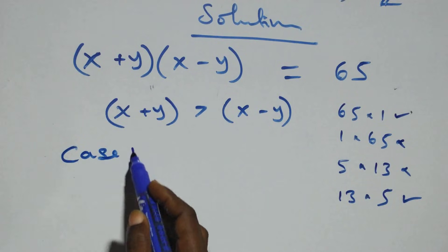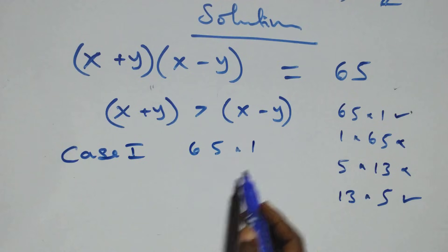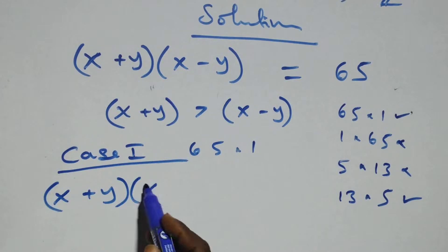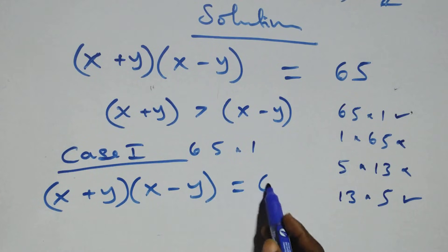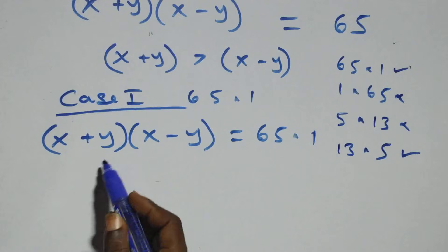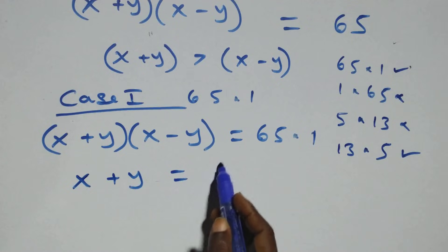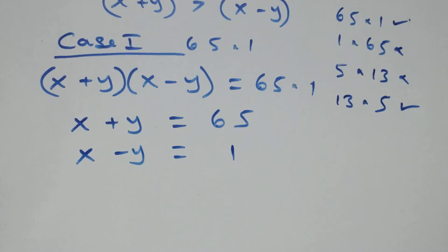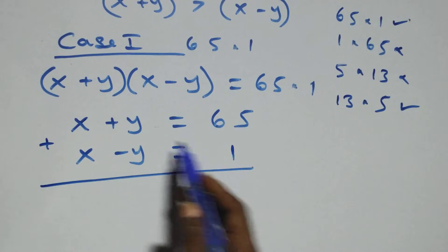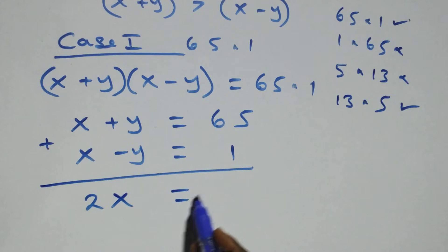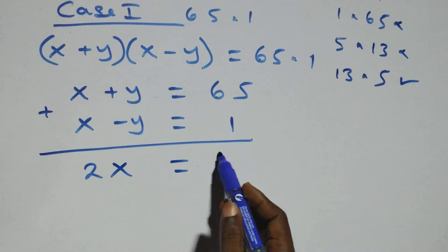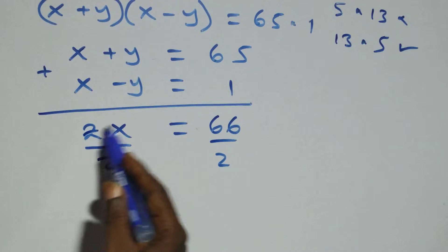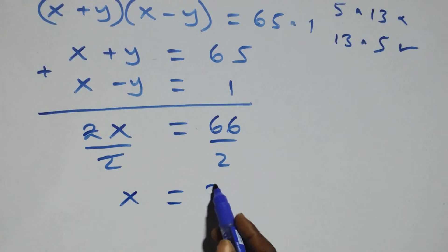Case 1 is 65 times 1. This implies the equation becomes: x plus y, open bracket, x minus y, equals to 65 times 1. This implies x plus y equals to 65 and x minus y equals to 1. We solve this simultaneously. Eliminating y: x plus x gives 2x, which equals 65 plus 1, that is 66. Divide both sides by 2.